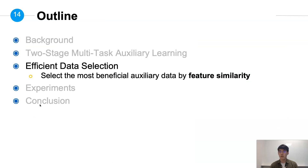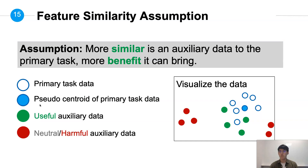So how do we sample data efficiently? We cannot train through all the data, so we need to decide whether to use the data only by its property. Thus we propose the idea of feature similarity. We make an assumption that more similar auxiliary data to a primary task, the more benefit it can provide. We use a figure to demonstrate our idea: beneficial auxiliary data (green points) will be more similar — closer to the pseudo-centroid of the primary task — compared to unhelpful data (red points).